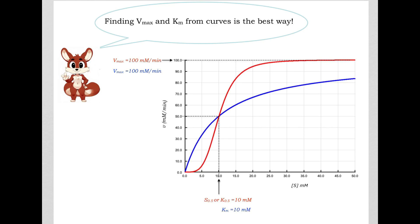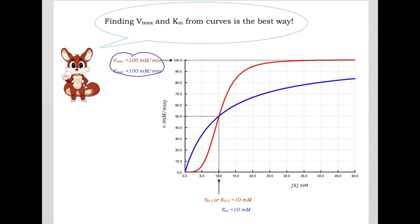As we mentioned in previous videos, VMAX and KM are two very important values that we determine from enzyme kinetics experiments. In these experiments, we determine the velocity at various substrate concentrations and then plot the data with velocity on the y-axis and substrate concentration on the x-axis. Today, with computers and very good nonlinear regression analysis software, these plots can be very easily made, and from these plots the software will calculate VMAX as well as KM.